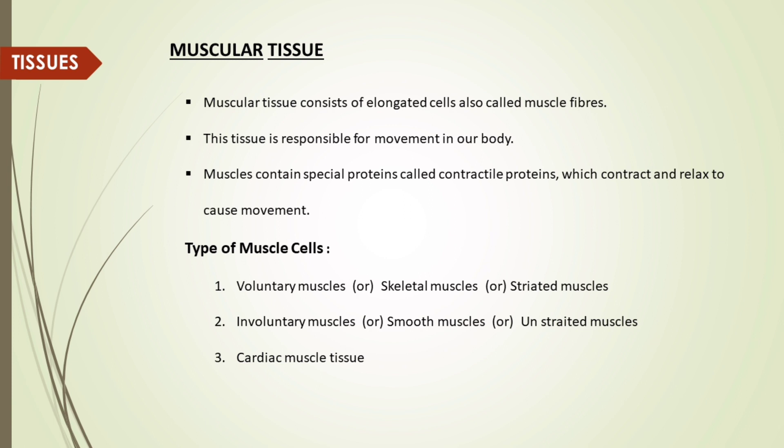The third type of animal tissue is muscular tissue. Muscular tissue consists of elongated cells, also called muscle fibers. This tissue is responsible for movement in our body. Muscles contain special proteins called contractile proteins, which contract and relax to cause movement.